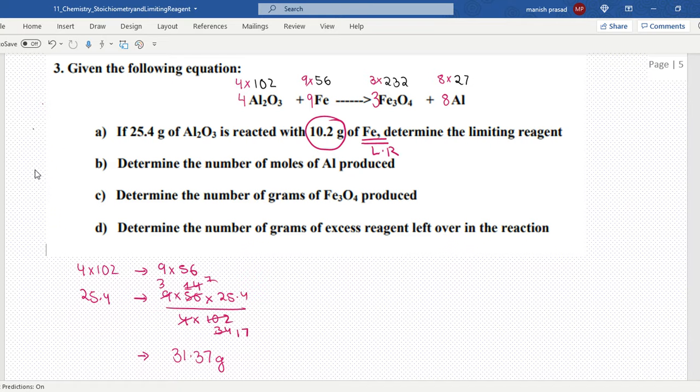Now moles of aluminum - we go according to the limiting reagent. 9 into 56 gives us 8 into 27, so 10.2 would give us 8 into 27 into 10.2 divided by 9 into 56. Don't calculate yet - number of moles is given mass divided by molar mass. Molar mass is 27, so this is 10.2 divided by 9 into 56 into 8. The 27s cancel and we'll get the answer for the second part.